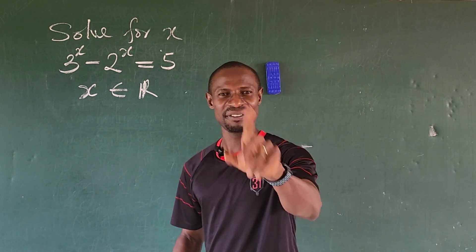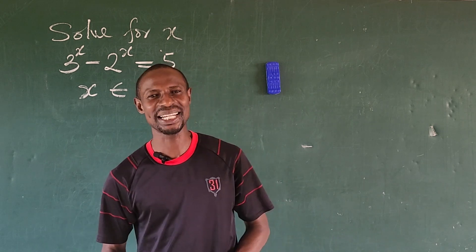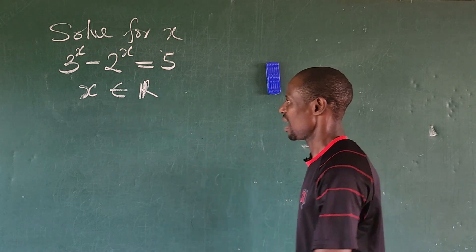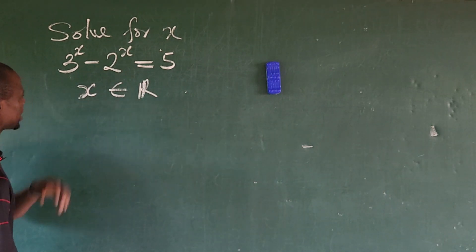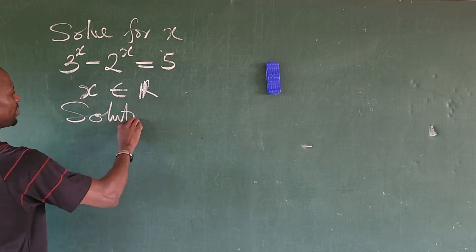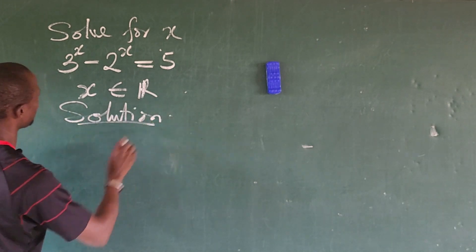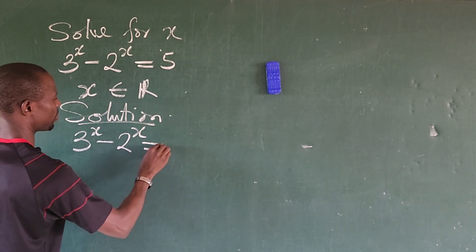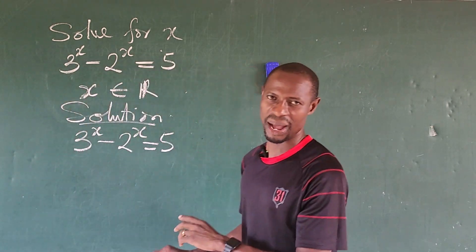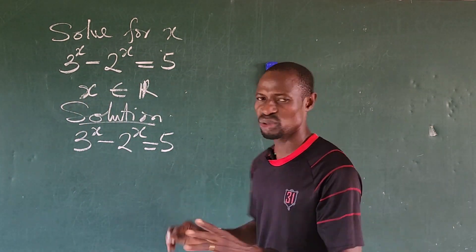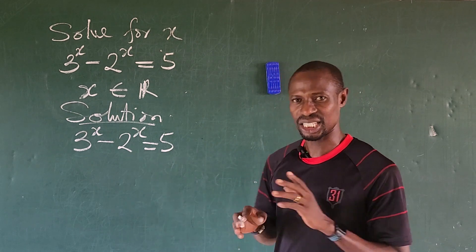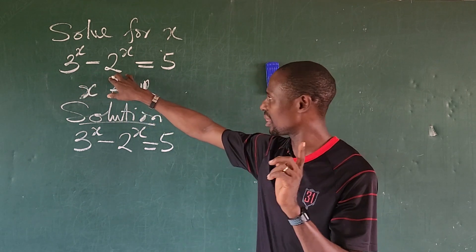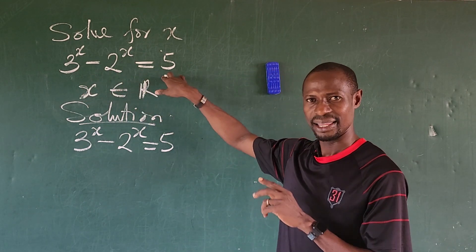Before we dive in — if you're new, this is Online Maths TV where we learn mathematics all the time, so do subscribe and turn on the bell notification. Now let's go to the solution. The question is: 3 to the power of x minus 2 to the power of x equals 5. This question was dropped by one of my viewers, similar to a math challenge I saw some time ago — a similar problem, though the figures are different.